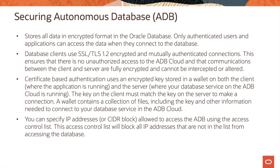Certificate-based authentication uses an encrypted key stored in a wallet on both the client and the server. The key on the client must match the key on the server to make a connection. A wallet contains a collection of files, including the key and other information needed to connect to your database service in the autonomous database cloud.